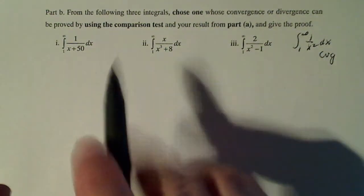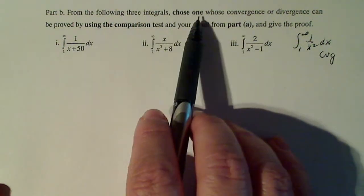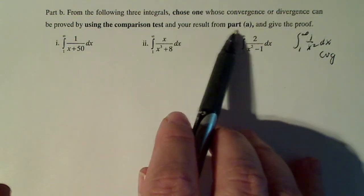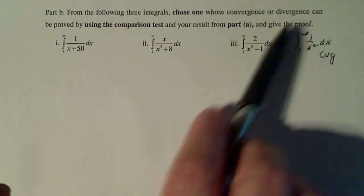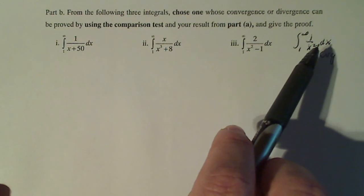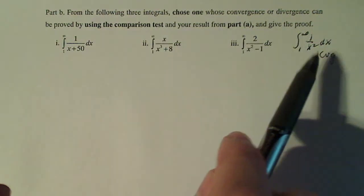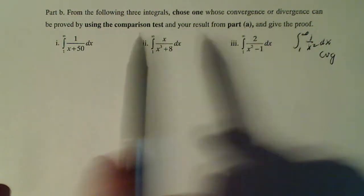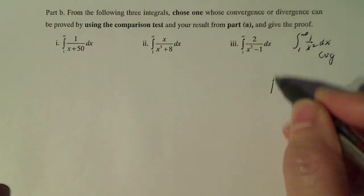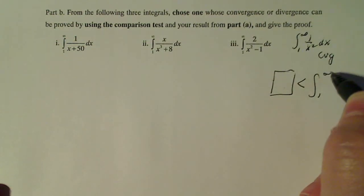This is kind of a note to self. From the following three integrals, choose one whose convergence or divergence can be proved by using the comparison test and your result from part A. Here's my result from part A. I want to compare my integrand to that integrand and make sure that I have the right relationship going so I can say, now because these two integrals are related this way, they both converge. What I really want in the end though is I want whatever integral I choose to be less than the integral that I got in part A.